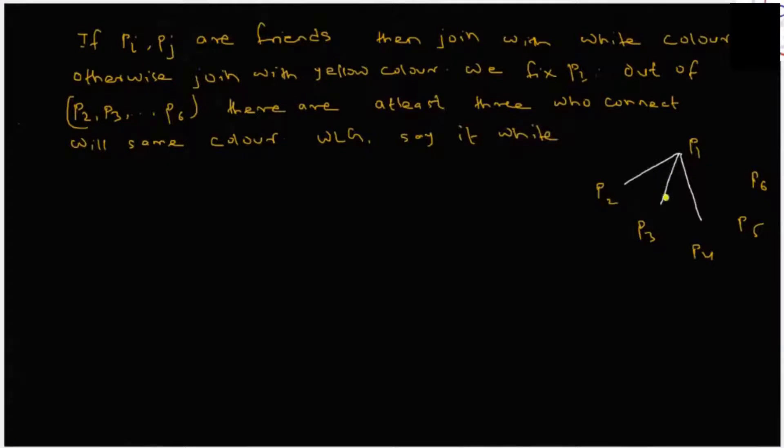Now without loss of generality, say it's white. I do not know whether they are P2, P3, and P4 - they can be any number. So better call them a1, a2, a3, the subset from P2 to P6 such that P1 a1, P1 a2, P1 a3 are white, that is they're friends.